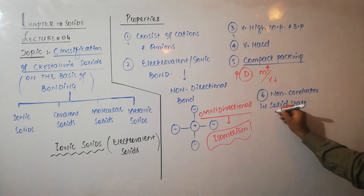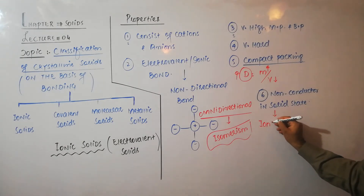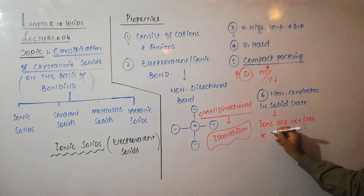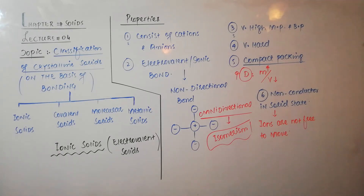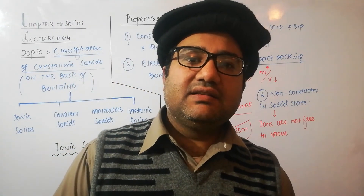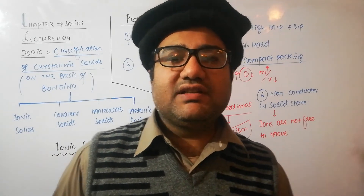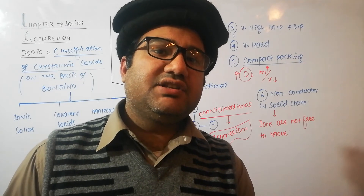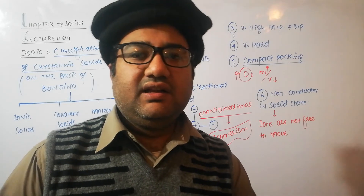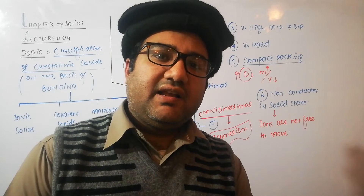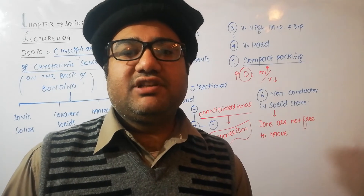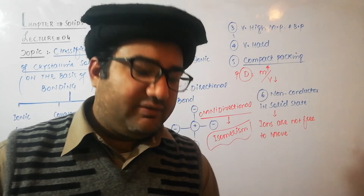Ionic solids are non-conductors in solid state because the ions are not free to move. In solids, only vibrational to-and-fro motion is present, so ions only show vibrational motion. Because ions are not free to move, they do not have translational kinetic energy, which is required for the conduction of electricity and the flow of charges. Since ions have only vibrational motion and no translational motion, the flow of charge is not possible in the solid state.